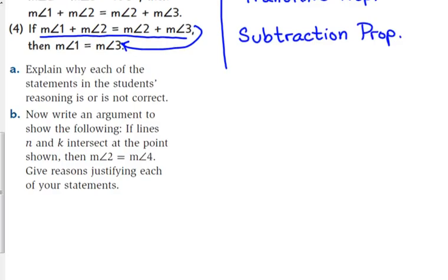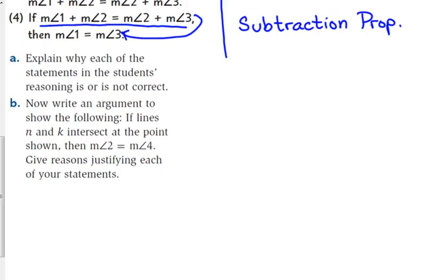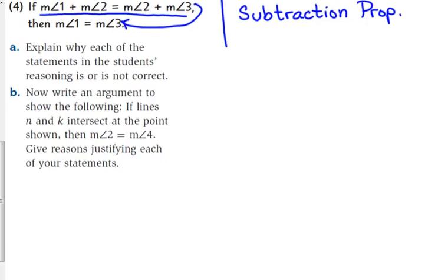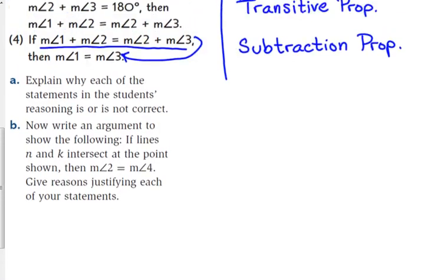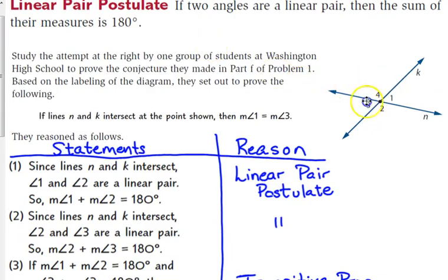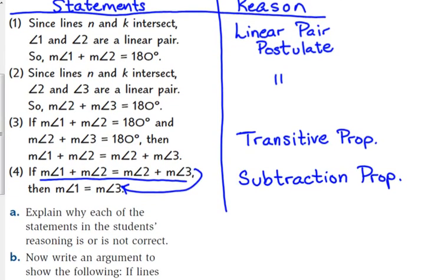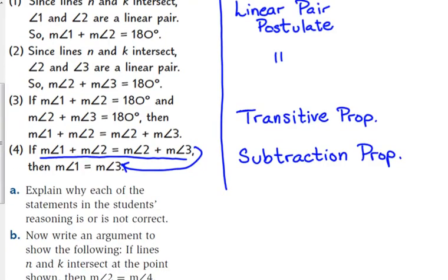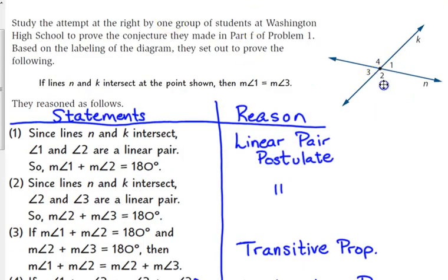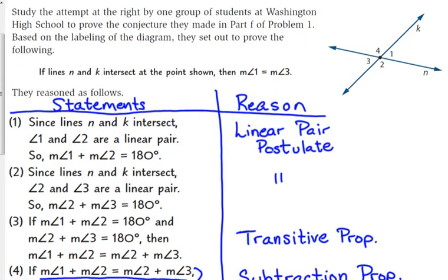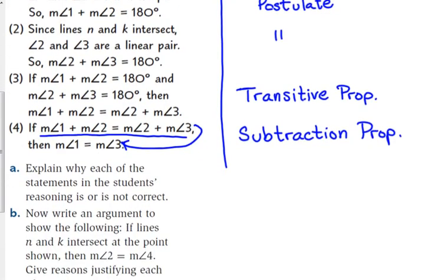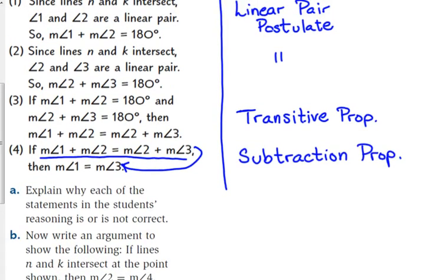Part B says: write an argument to show that if lines N and K intersect at the point shown, then the measure of angle 2 is equal to the measure of angle 4. It's the same idea, but instead of 1 and 3, we're talking about 2 and 4. We can use the same outline and just use angles 1 and 2 as a linear pair and 1 and 4 as a linear pair.